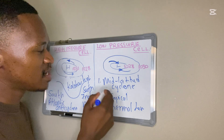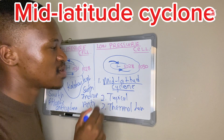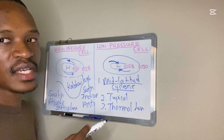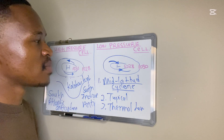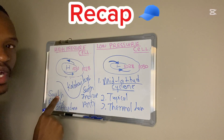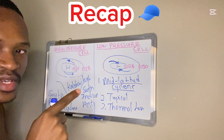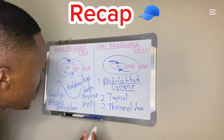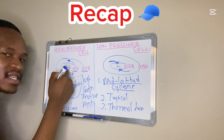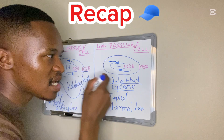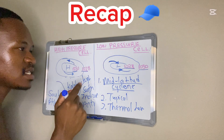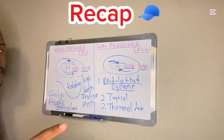In the next video we'll be covering the mid-latitude cyclone, which is a low pressure cell. To recap: for high pressure, the air circulation is anti-clockwise; for low pressure, the air circulation is clockwise. For high pressure, the isobar values increase towards the center; for low pressure, the isobar values decrease towards the center.